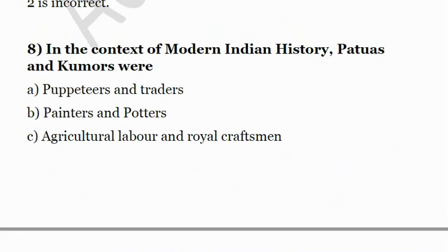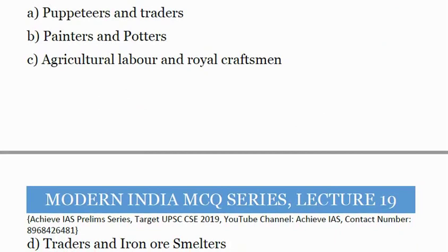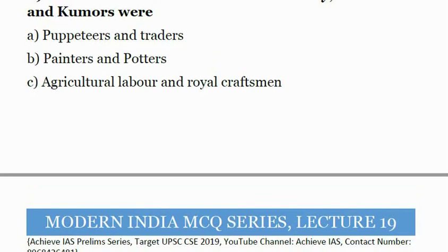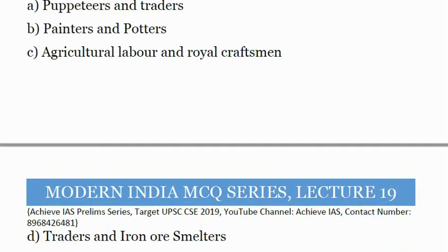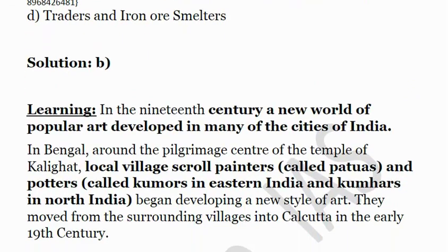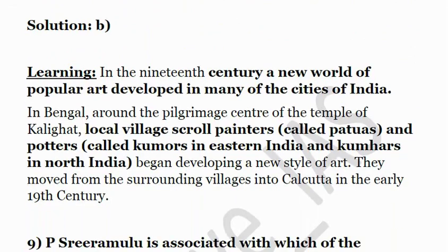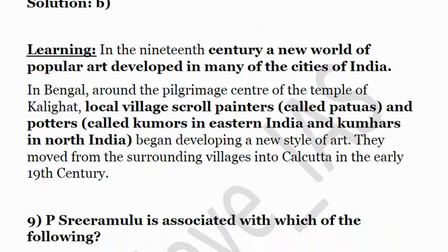The eighth question: In the context of modern Indian history, Patuas and Kumhars were — A, puppeteers and traders; B, painters and potters; C, agriculturists and royal craftsmen; D, traders and iron smelters. The correct answer is B — painters and potters. Kumhars are known as potters in northern India. In the 19th century, a new world of popular art developed in many Indian cities, and Patua painters along with Kumhar potters developed a new style of art, moving from surrounding villages into Calcutta in the early 19th century.